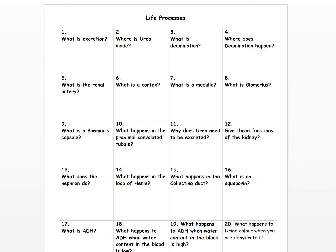Question ten: what happens in the proximal convoluted tubule? The reabsorption of glucose and amino acids, happening by active transport. Question eleven: why does urea need to be excreted? It's a metabolic waste. In high levels it will cause issues for various life processes and cells. Question twelve: give three functions of the kidney.